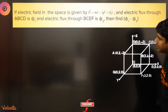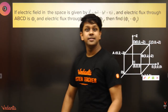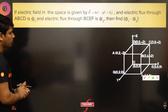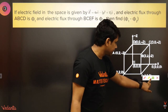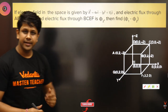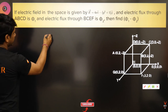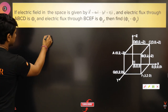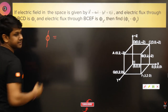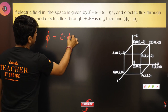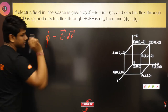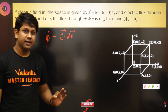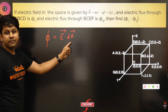Now the next question has no options — it is an integer type question. A very simple question if you look carefully. Do you know the flux formula? Flux is given by Φ = ∮ E⃗ · dA⃗, where E is the electric field and dA⃗ is the area vector.